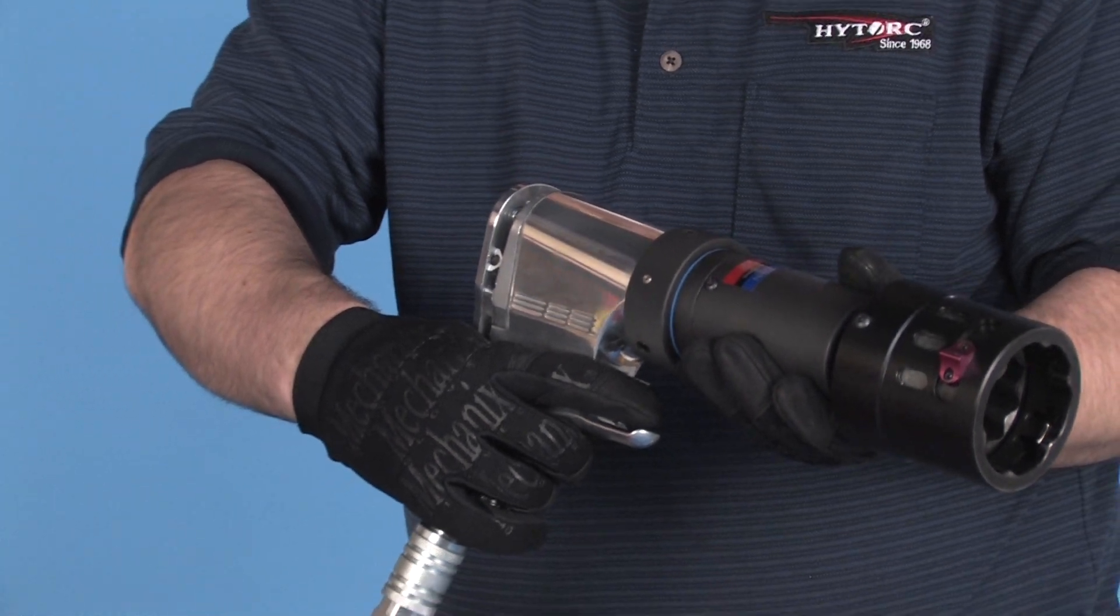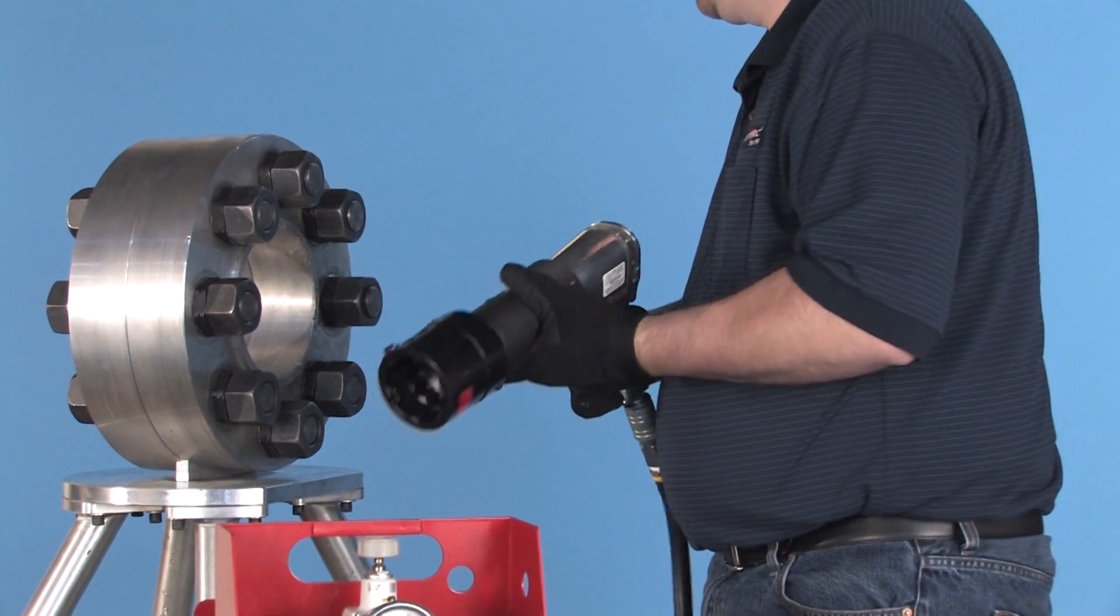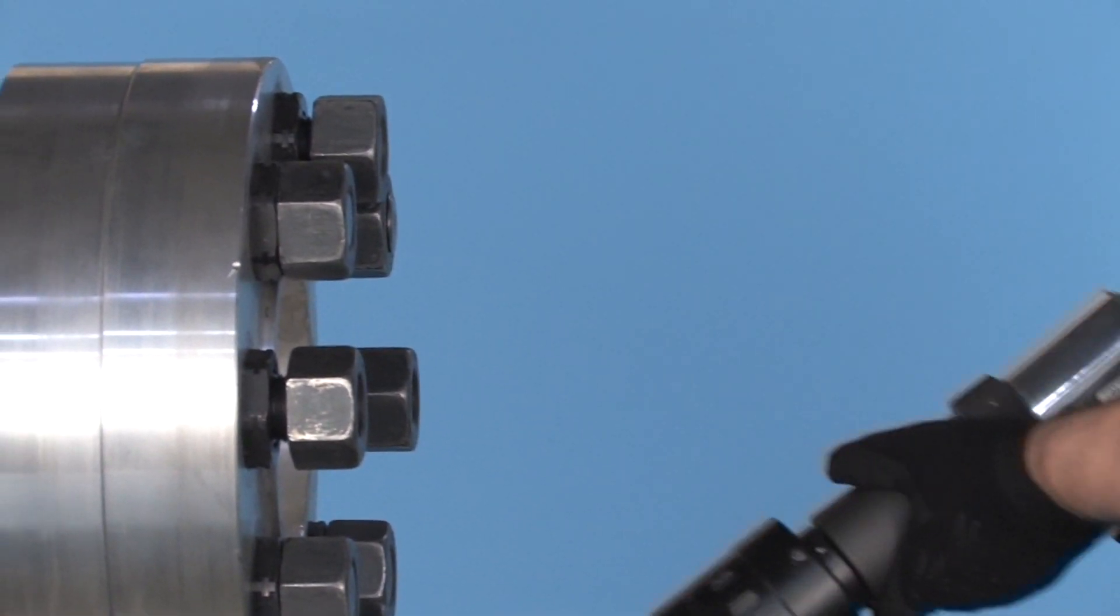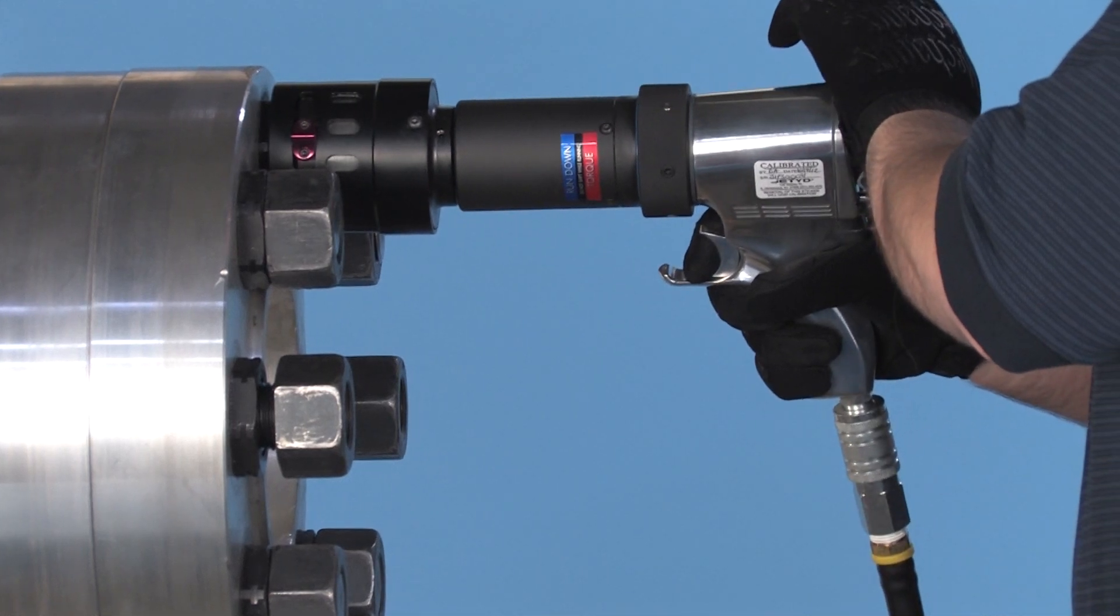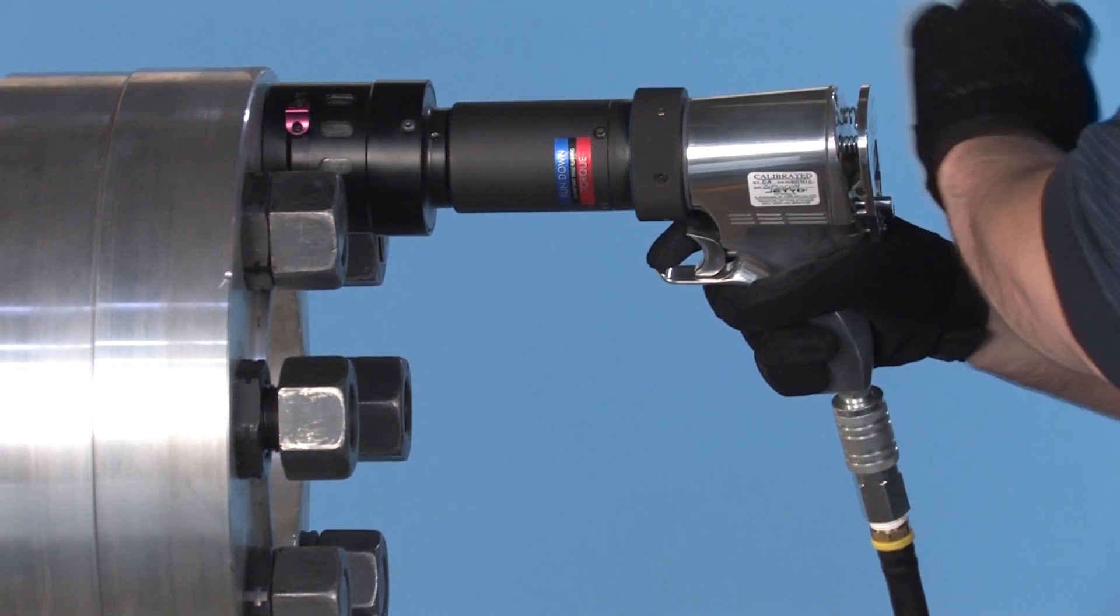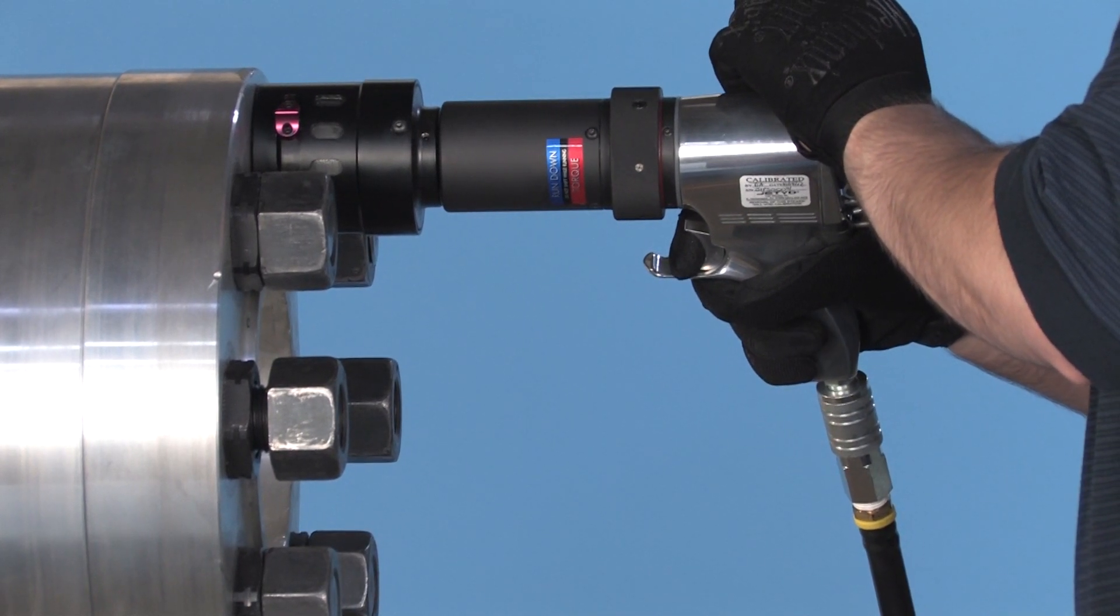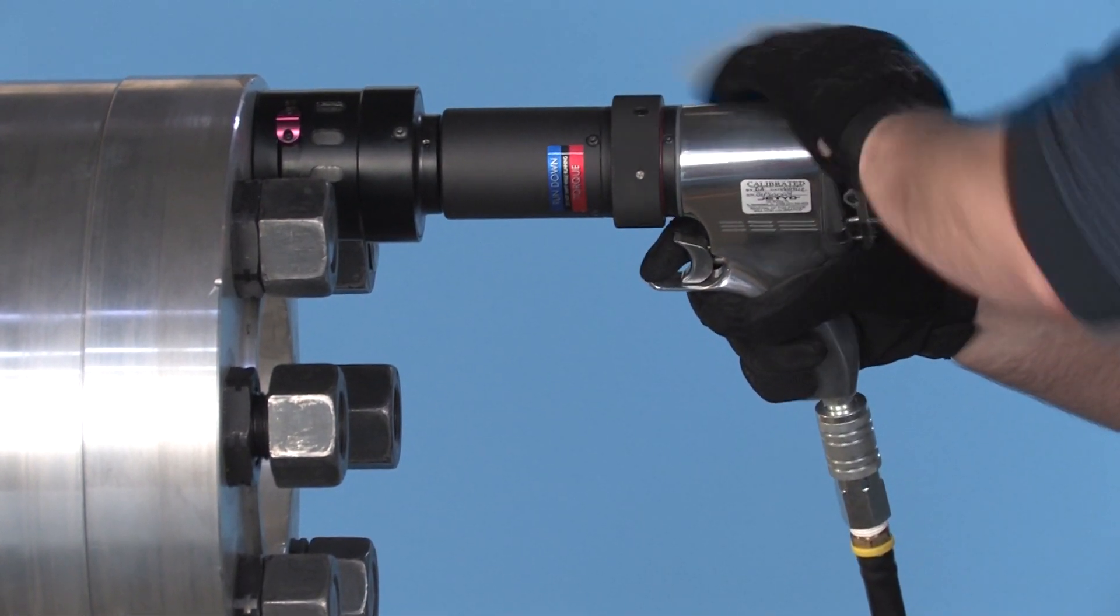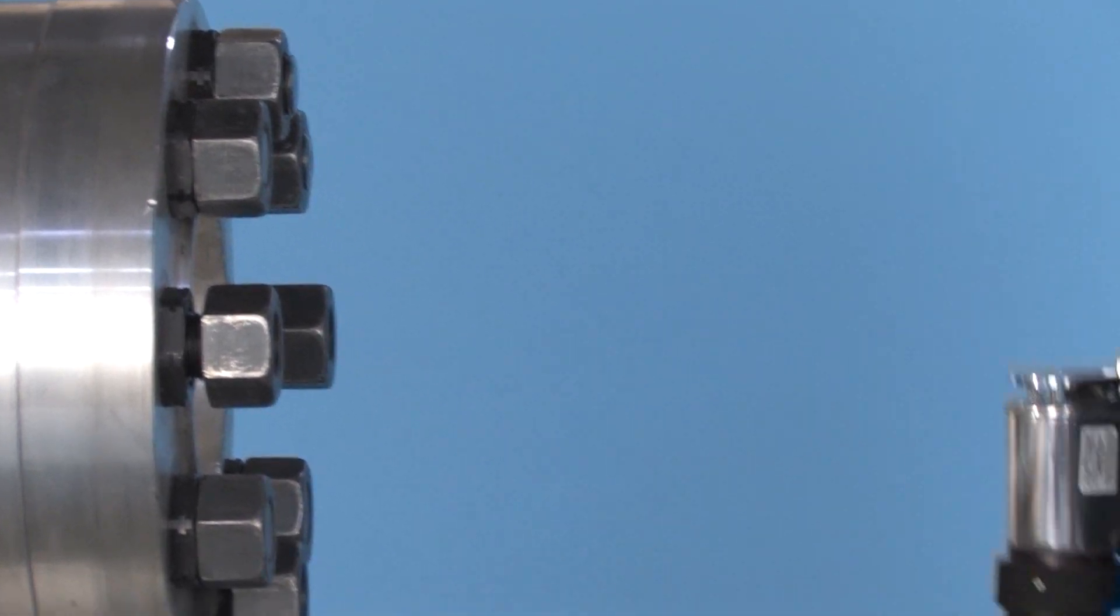The same process and steps apply when using the high torque washer and driver, except that there is no need to remove or reapply the reaction arm. With the dual drive socket in place, the wrench can be speedily shifted from run down to torquing to run off,